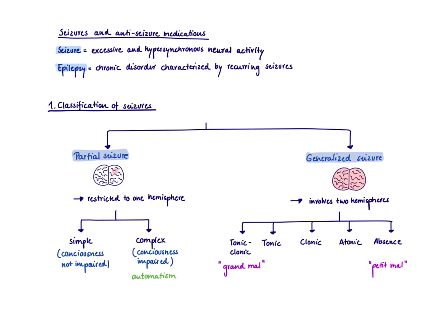Let's start to talk about the classification of seizures. Generally, we distinguish between partial seizures and generalized seizures. Partial seizure means that there is a restriction of the seizure to one hemisphere, so only a part of your brain. In contrast, generalized seizure means that it involves both hemispheres, so it is generally all over the brain.